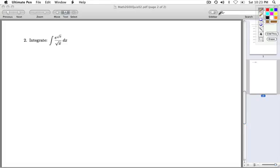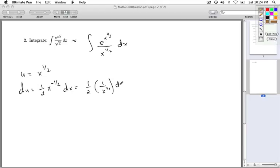Number two, you're asked to integrate e to the square root x over square root x dx. So I'll write this as e to the x to the 1 half over x to the 1 half dx. And so I'm going to let u be the thing in the exponent. And so your du is 1 half x to the minus 1 half dx, which is 1 half times 1 over x to the 1 half dx, which is pretty much what I have here. So I can fix this up. I can counteract the 1 half by putting a 2 out front.